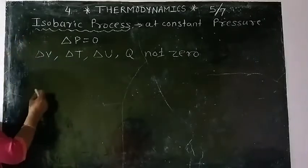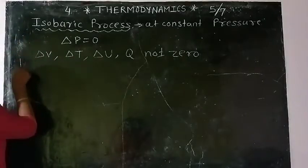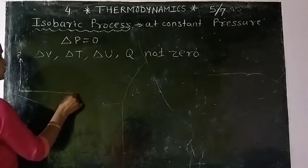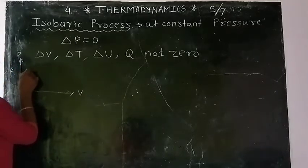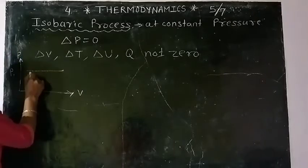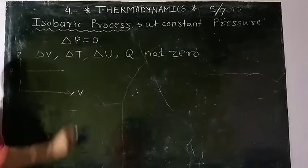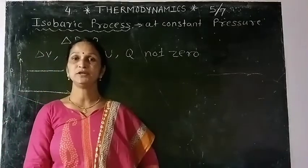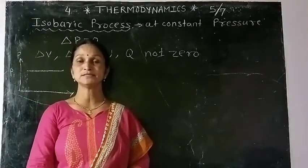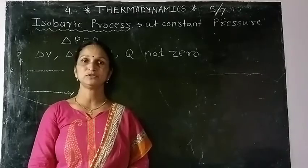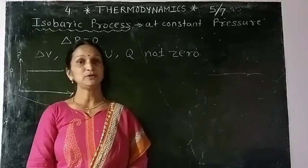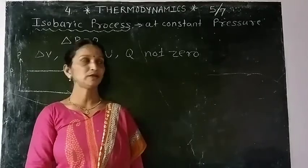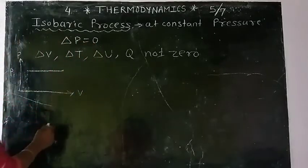The PV diagram for an isobaric process shows a line parallel to the volume axis, since pressure is constant. The different lines on weather maps provided by the meteorology department are all isobars — they also represent isobaric processes.